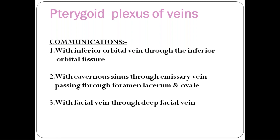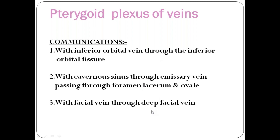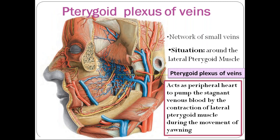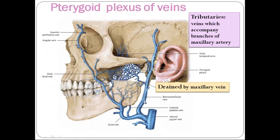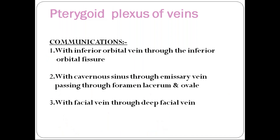Any infection in the face and the area surrounding the mandible and maxilla, if not treated properly, will spread to the cavernous sinus and lead to cavernous sinus thrombosis. This is the applied aspect of the pterygoid plexus of veins. The important points are: it acts as a peripheral heart and its communications can lead to cavernous sinus thrombosis.